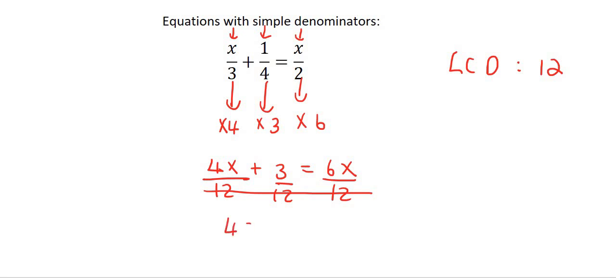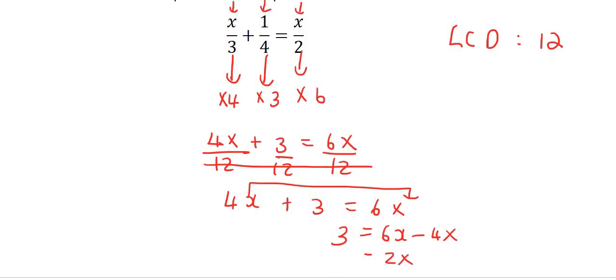Now it's easy. We just say 4x plus three equals 6x. Now you just get all the x's to the one side. So I'm going to take this over here. So we're going to get 6x minus 4x equals three. That's going to give us 2x equals three. And so x is going to be three over two.